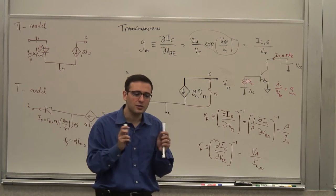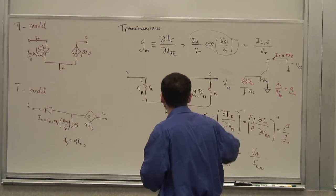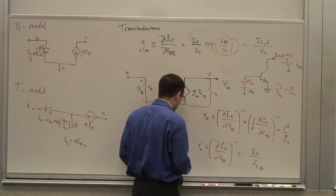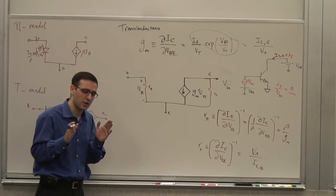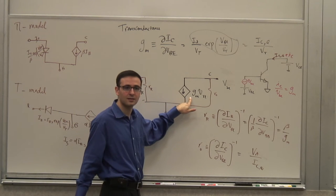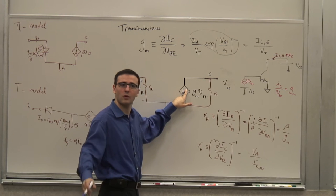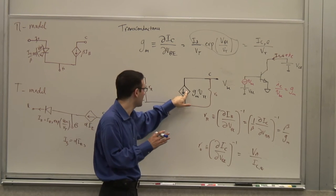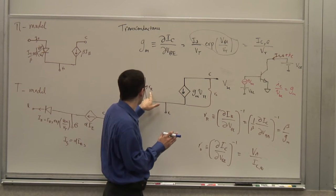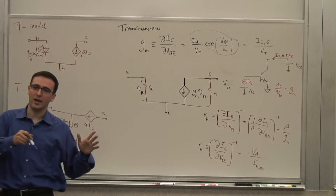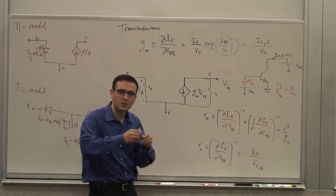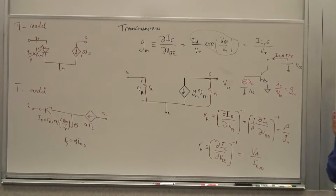In addition to these three that we most often use, there are other terms. These are the zero-order effects. If you want a quick calculation of how a transistor works, that's all you need. These are the first-order effects. Now I'm going to show you some second-order effects and then some dynamics.